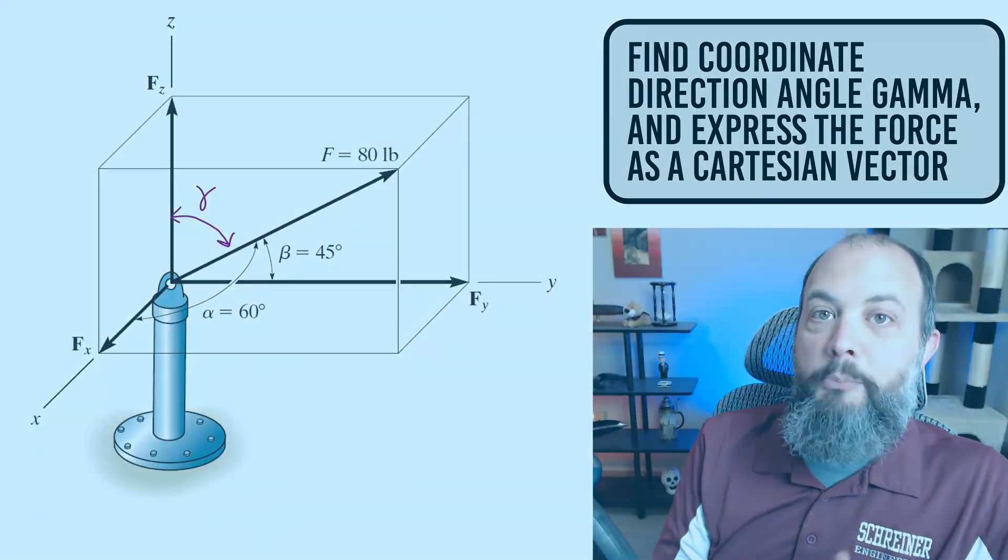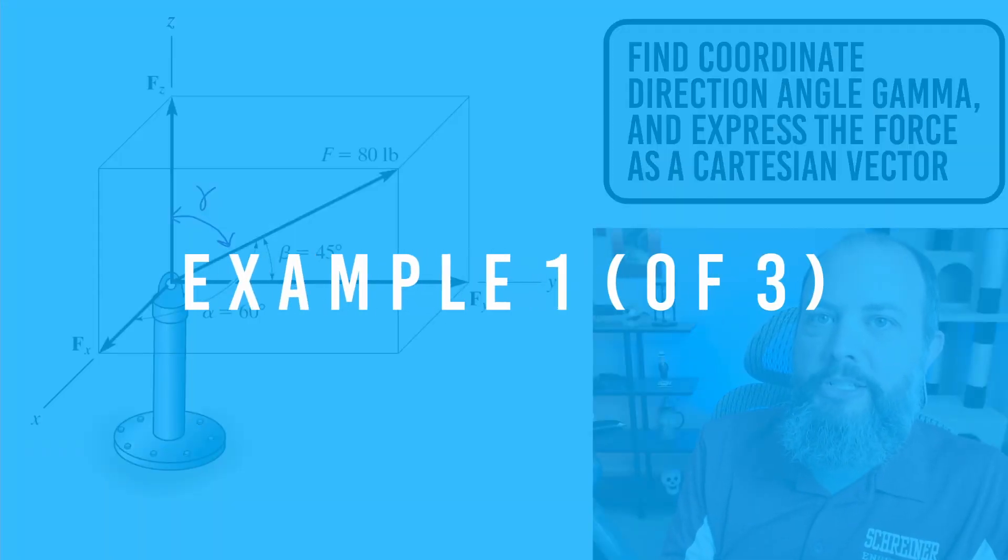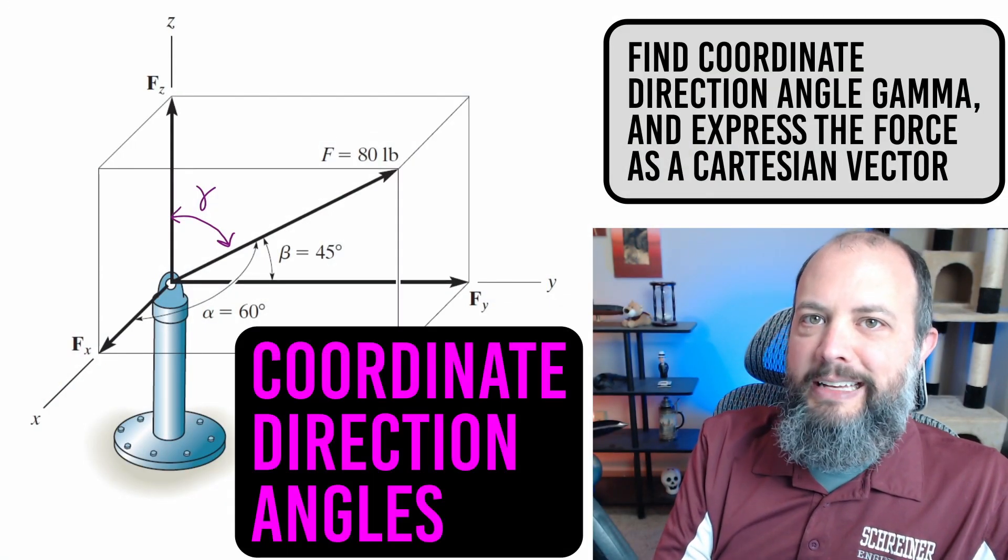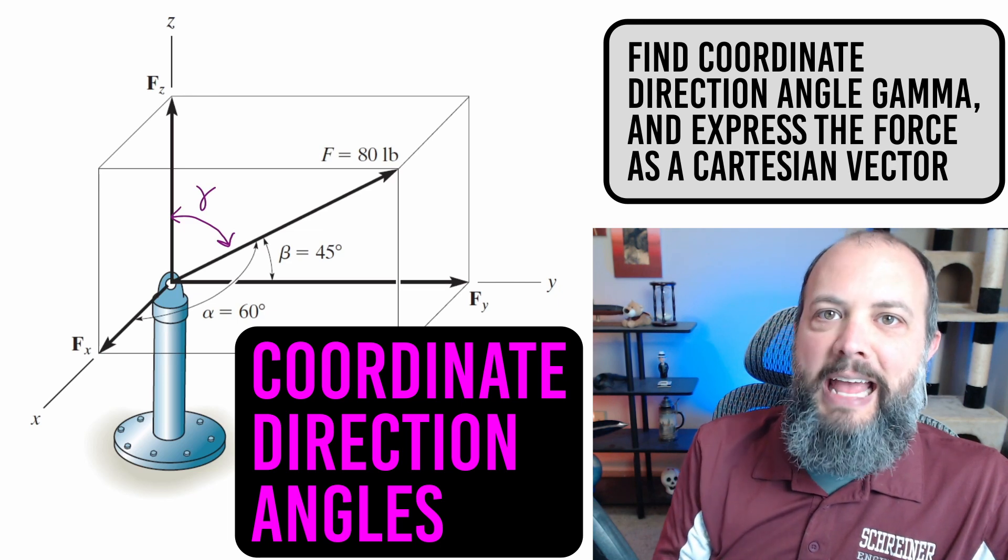But if you do have angles for your three-dimensional vector, this is one way that they can be presented. Alpha, beta, gamma, with the alpha measuring the angle to the X axis, beta to the Y axis, and gamma to the Z axis.